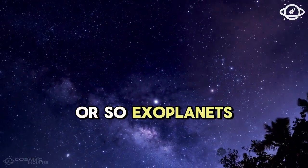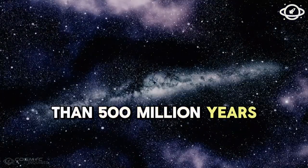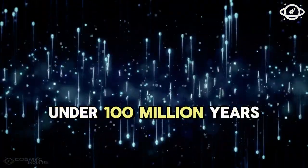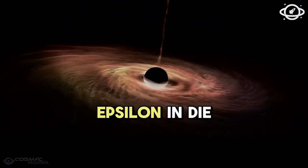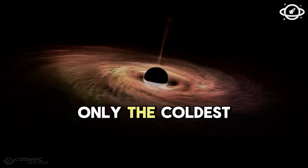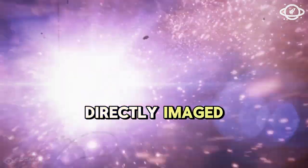Of the 25 or so exoplanets directly imaged so far, all were less than 500 million years old, with most being under 100 million years old. Against this background, Epsilon Indi AB is not only the coldest, but also by far the oldest exoplanet that has been directly imaged to date.